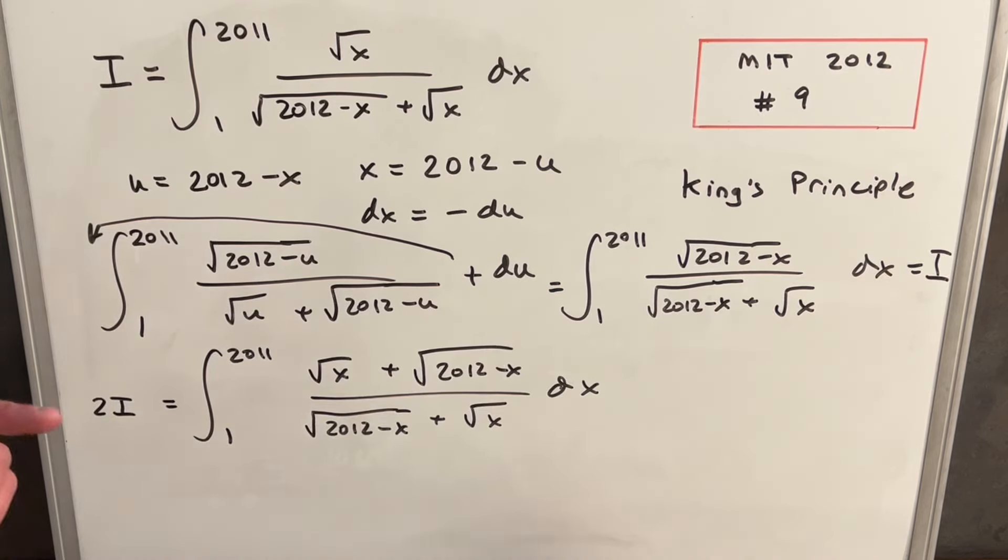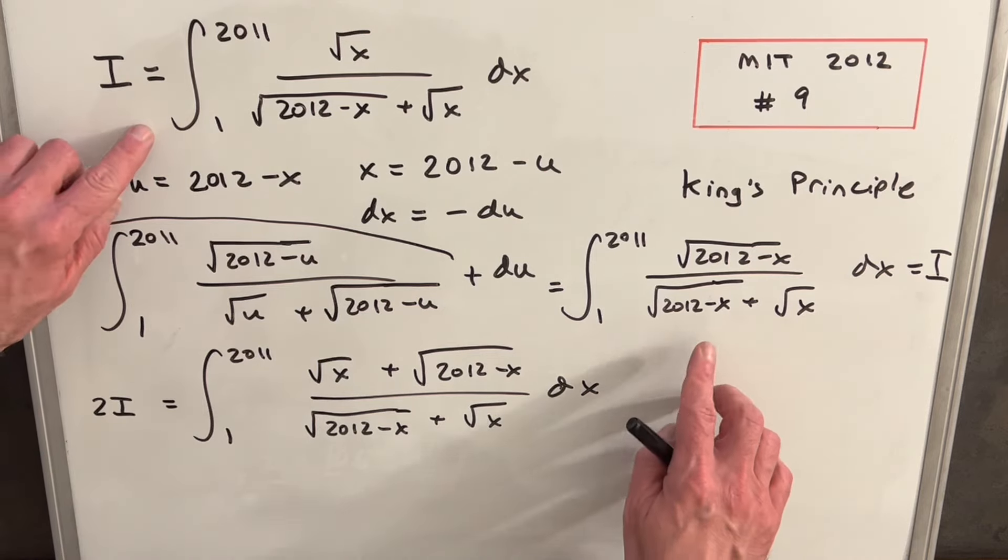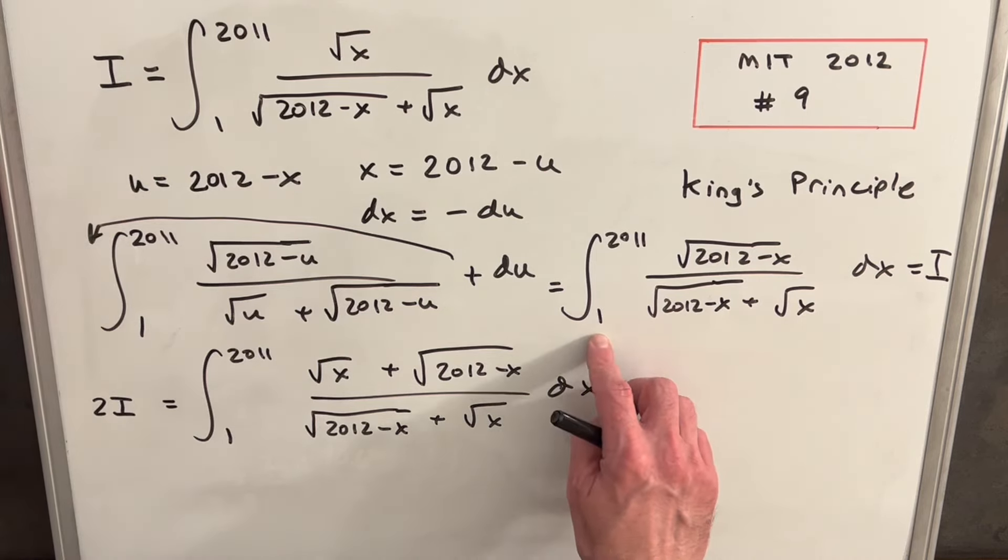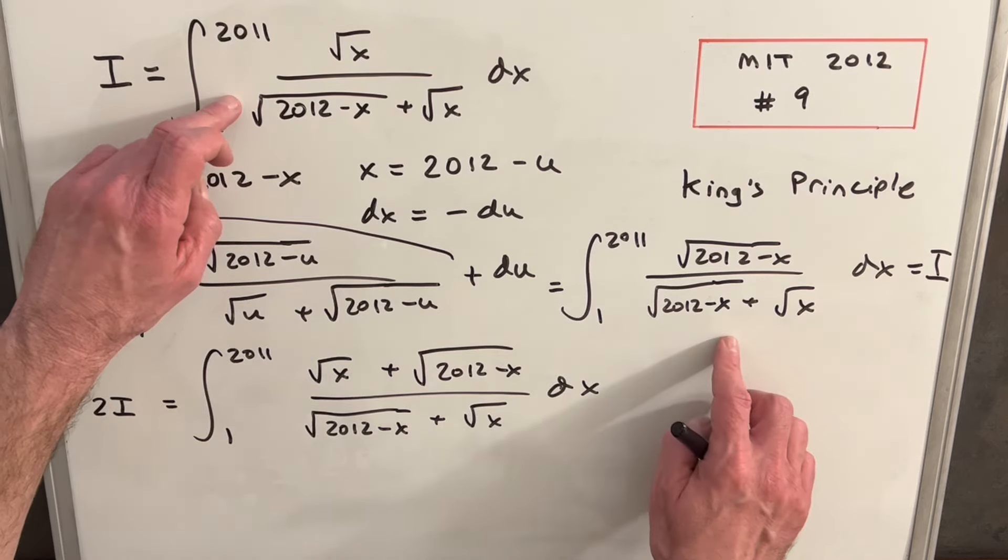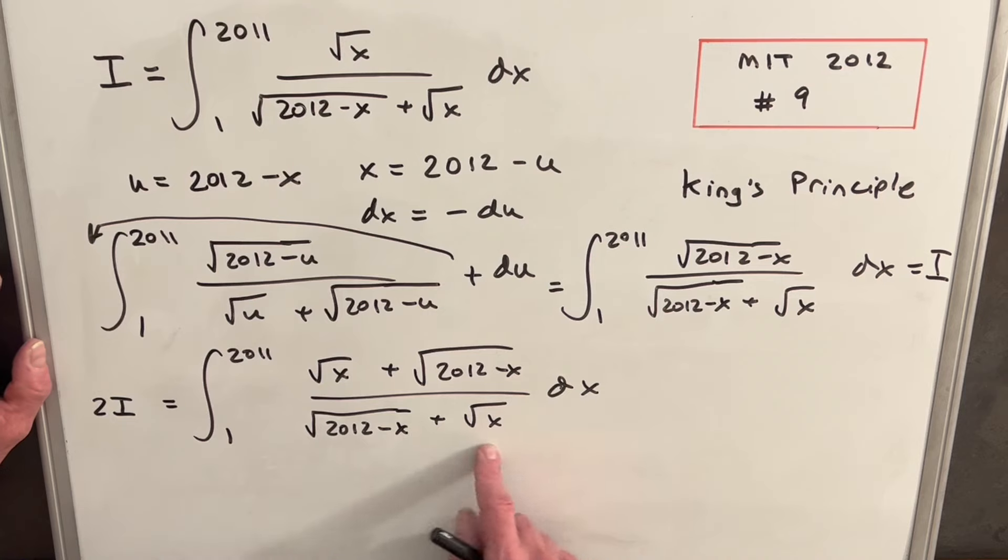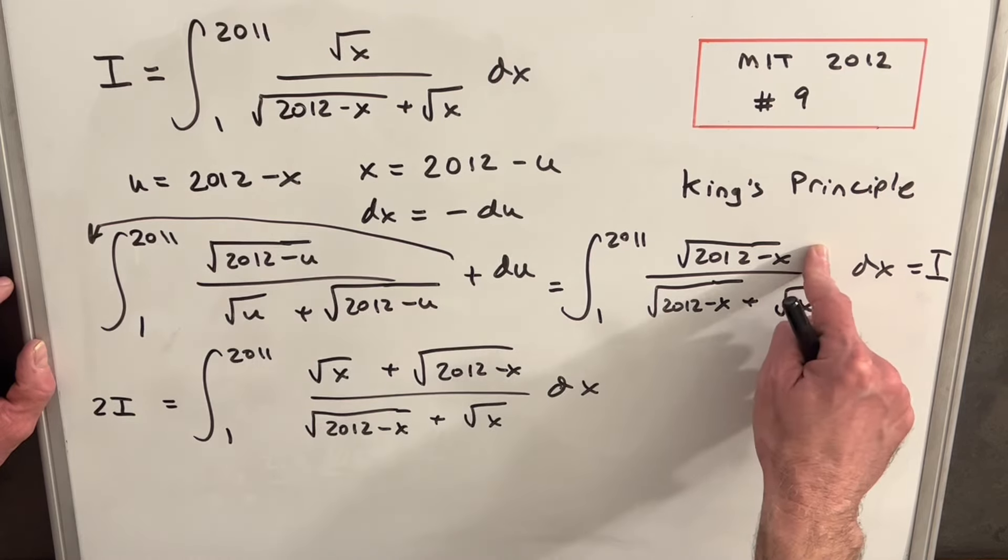With this rewrite, I kind of skipped a couple of steps. Because we've had two integrals, but with the same variable and the same bounds, I was able to bring this into one integral. Because the denominator is the same in both integrals, we could just bring this together under the same denominator, adding our square root of x and the square root of 2012 minus x.